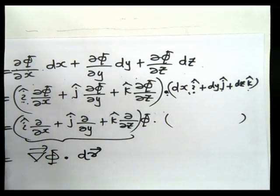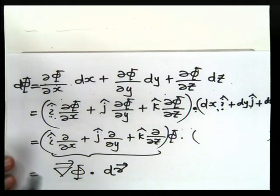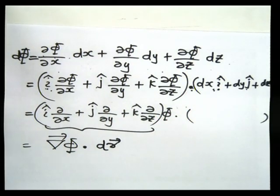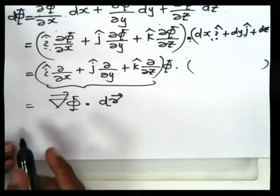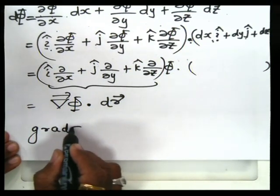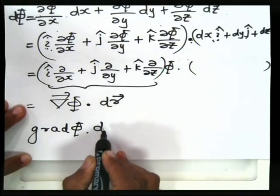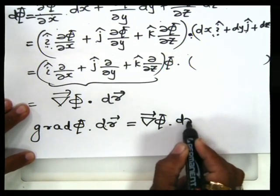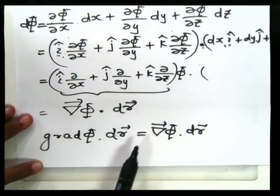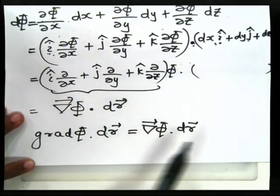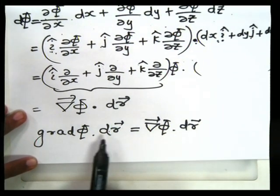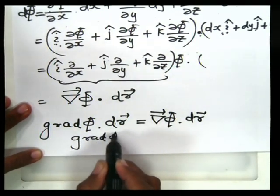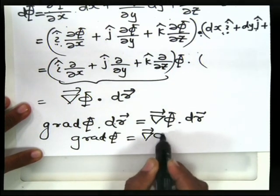So I can write down nabla φ dot dr, and this is equal to dφ. I am able to prove that dφ equals nabla φ dot dr. Now, a little while ago we proved that grade φ dot dr equals nabla φ dot dr, and dφ equals grade φ dot dr. So it is obvious that if I drop dr — because we took the dot product of dr on both sides — this can be written as grade φ equals nabla φ.